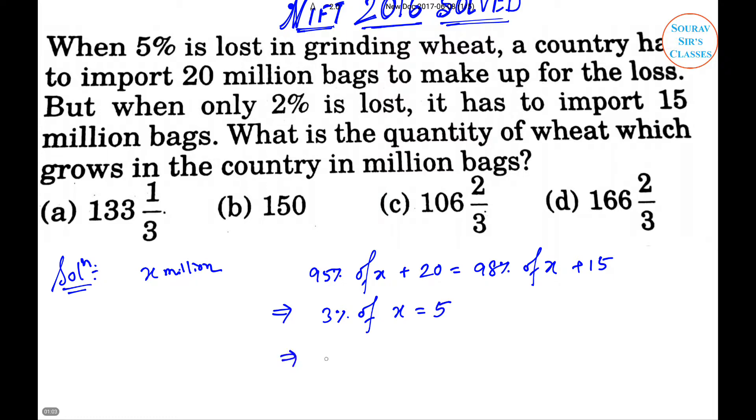That implies x equals 5 by 3 multiplied by 100, which equals 500 by 3. So that equals 166 and 2 by 3. So option D will be the right answer.